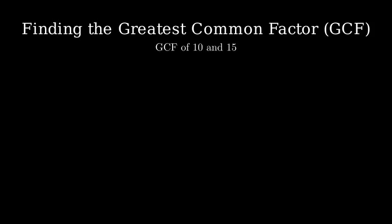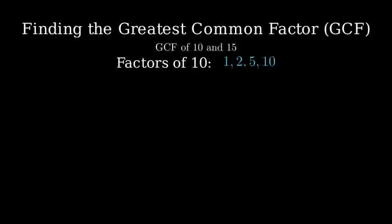Let's find the GCF of 10 and 15. The first method we'll use is listing out all the factors of each number. Let's start with 10. To find the factors of 10, we'll list all numbers that divide evenly into 10. The factors of 10 are 1, 2, 5, and 10.